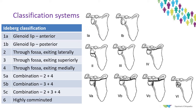Moving on to the Eidelberg classification — a radiographic classification system applicable to glenoid fractures with or without scapular involvement. It's useful as the grading correlates to management options and potentially to outcomes. Glenoid rim fractures would fall within Eidelberg 1A for anterior or 1B for posterior rim fractures. Eidelberg 2, 3, and 4 cover fractures through the fossa with progressively more scapular involvement. Eidelberg 5 fractures have combinations of 2 through 4 patterns with increasing comminution.